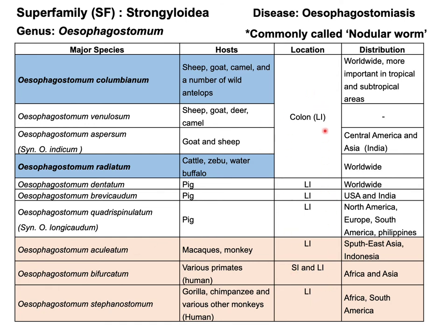All these parasites are located in the large intestine, especially the cecum and colon. The distribution of Esophagostomum columbianum is worldwide but mostly found in tropical and subtropical areas. Esophagostomum radiatum is also distributed worldwide. All these parasites are responsible for causing esophagostomiasis, and are commonly known as nodular worms because they produce nodules in both the small intestine and large intestine.